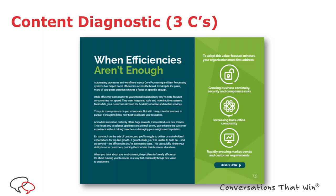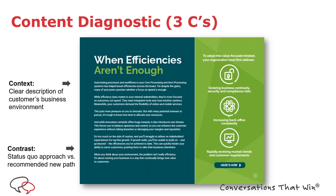Here's a quick example of a single page from an ebook containing all three C's. Starting with context: a clear, vivid description of the customer's world with hooks and references to activities and departments they'll recognize. Next, contrast: the status quo approach versus the recommended better way — here's the flawed approach, here's what you need to be doing differently. And finally, simple iconography and simple words to represent complex concepts that reinforce the buyer's ability to retain and potentially retell that message to someone else.